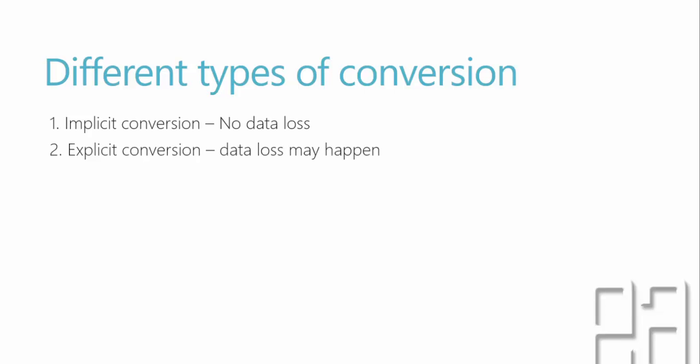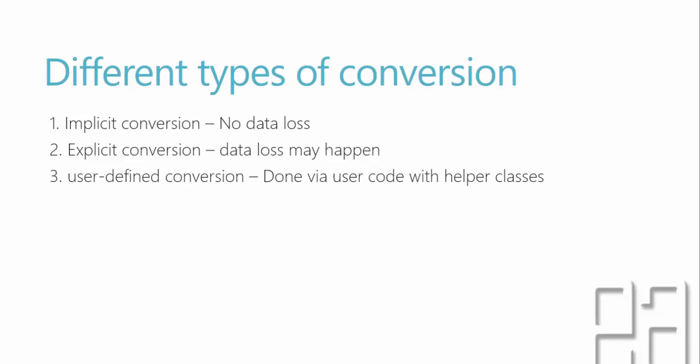Explicit conversion may involve data loss — it's not always guaranteed, but it depends on how you convert. Here you have to explicitly specify what type you want to convert to. For example, converting an integer to a string requires explicitly specifying that conversion. There are also user-defined conversions, which can be done via user code with helper classes — it's completely up to you how you write that helper class.